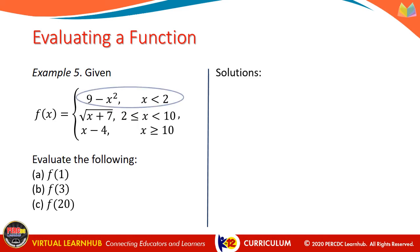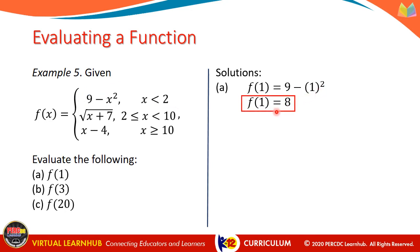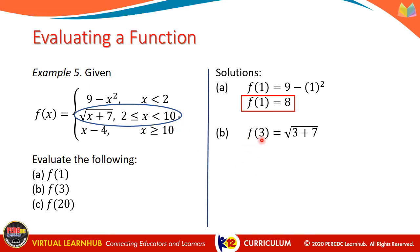For letter a, since 1 is less than 2, we use f of x equals 9 minus x squared. So f of 1 equals 9 minus 1 squared, which equals 8. For letter b, f of 3: since 3 is within the range x greater than or equal to 2 but less than 10, we use f of x equals square root of x plus 7. So f of 3 equals square root of 3 plus 7, which is square root of 10.